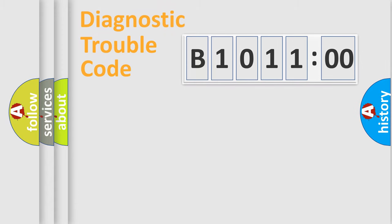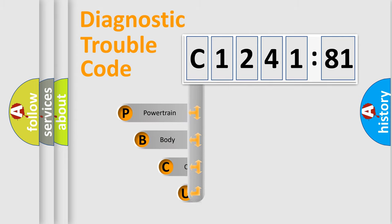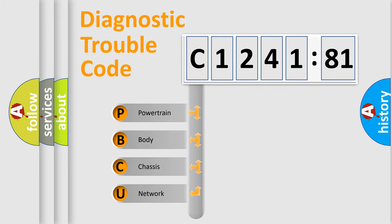We divide the electric system of automobile into four basic units: Powertrain, Body, Chassis, and Network. This distribution is defined in the first character code.